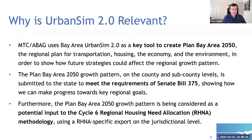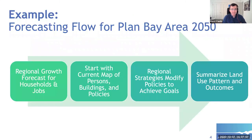Importantly, the Plan Bay Area 2050 growth pattern is being considered as a potential input to the Cycle 6 RHNA methodology, or regional housing need allocation process. To do that, we produce special RHNA-specific exports at the jurisdictional level. That's how Urban Sim plays a role in both of these key regional planning processes, along with other models and key inputs.